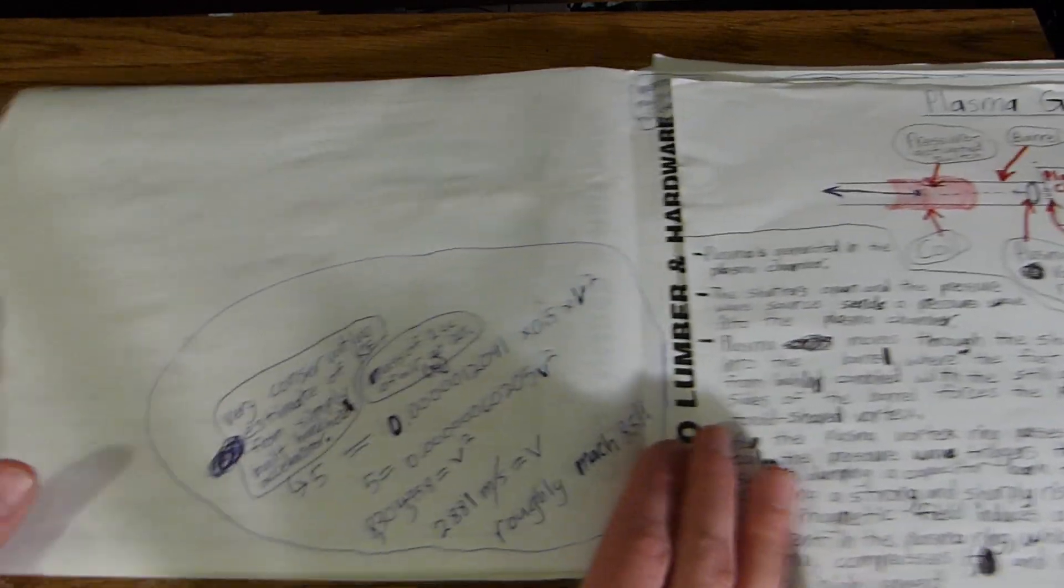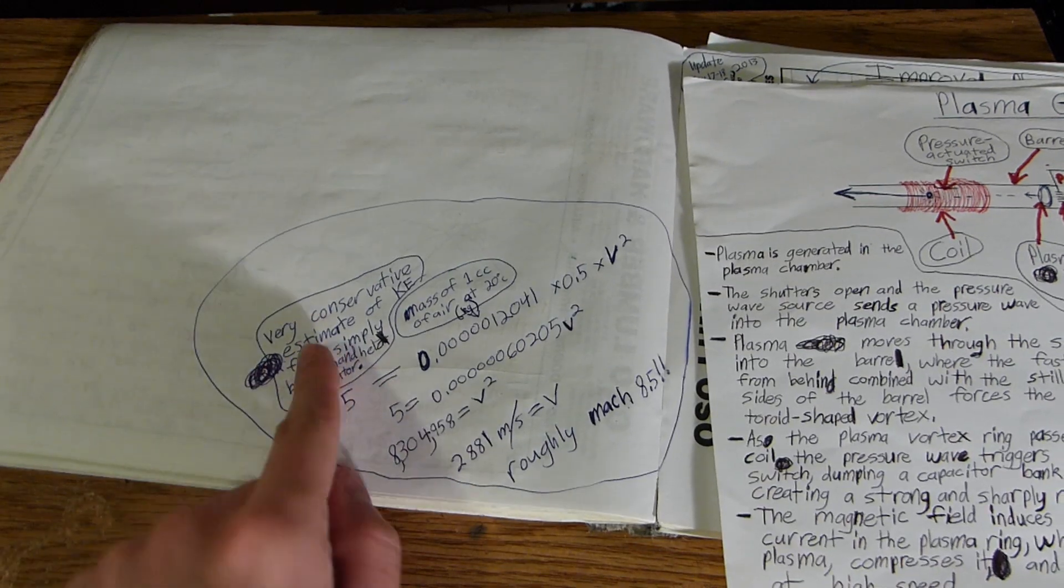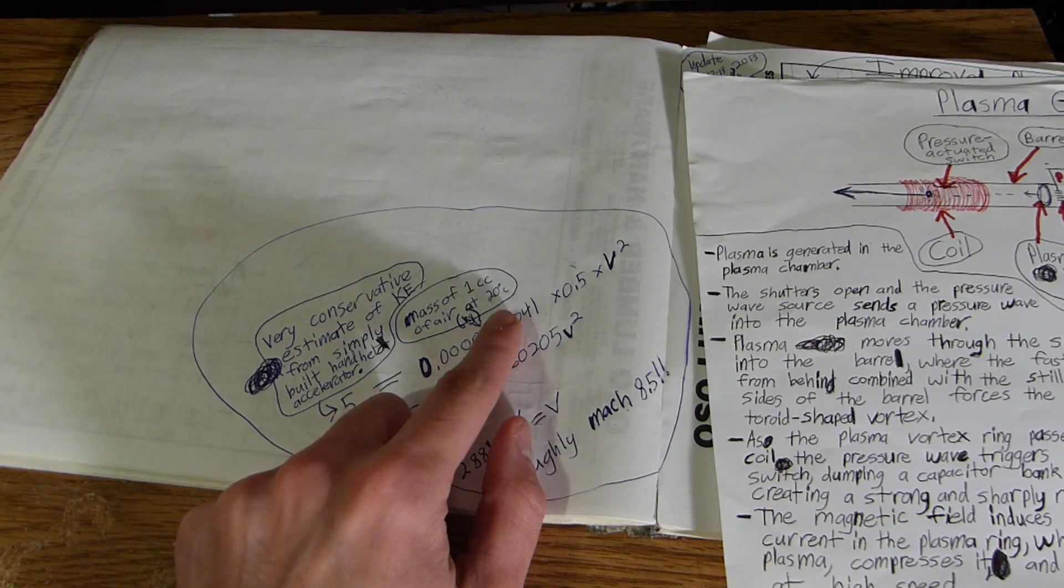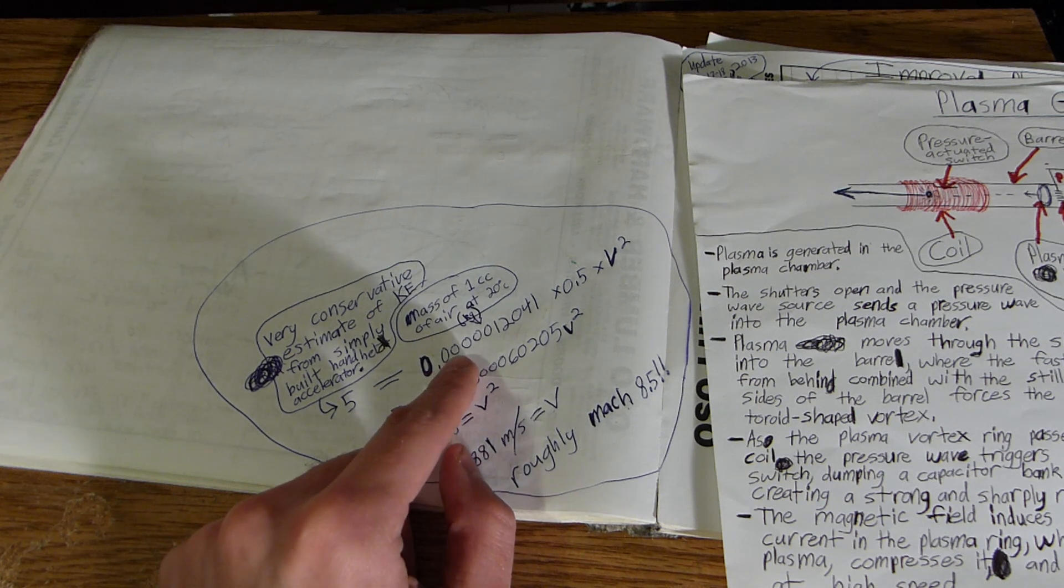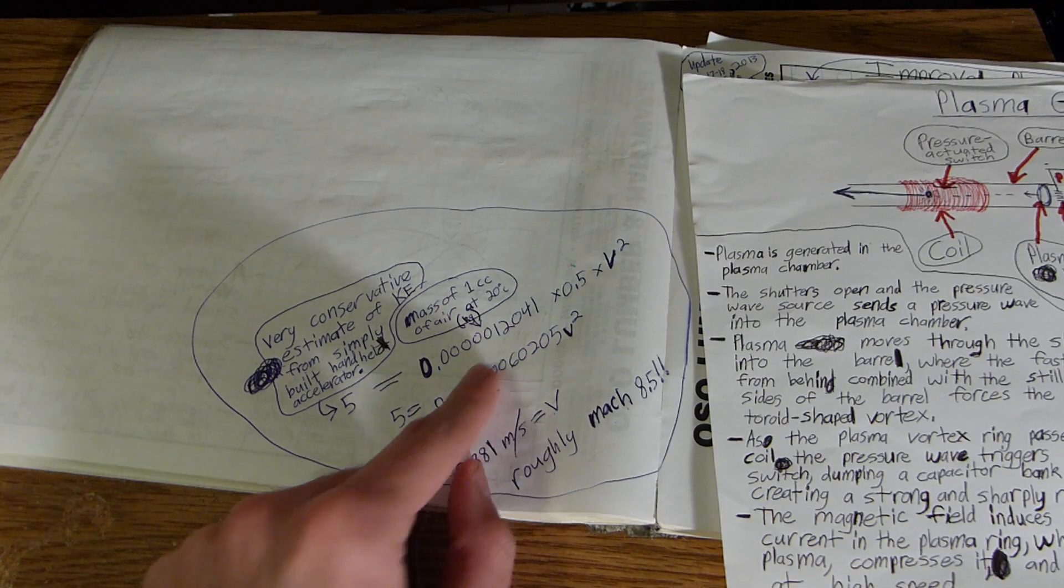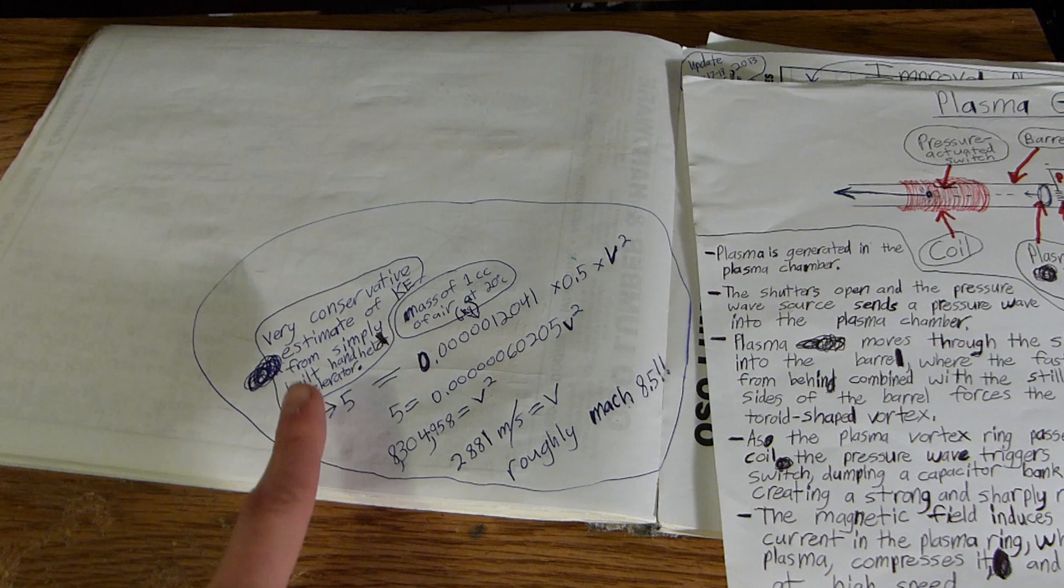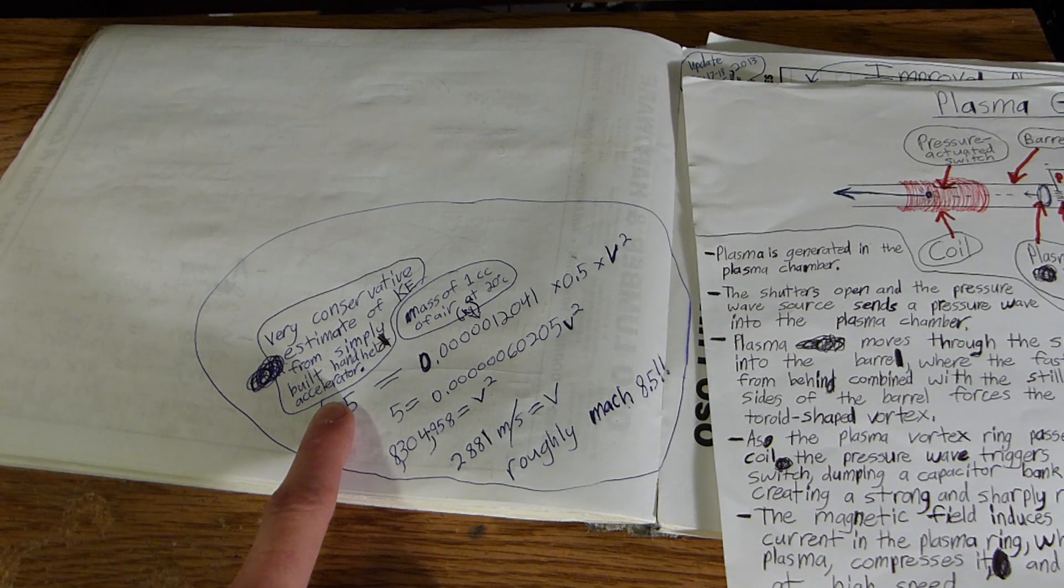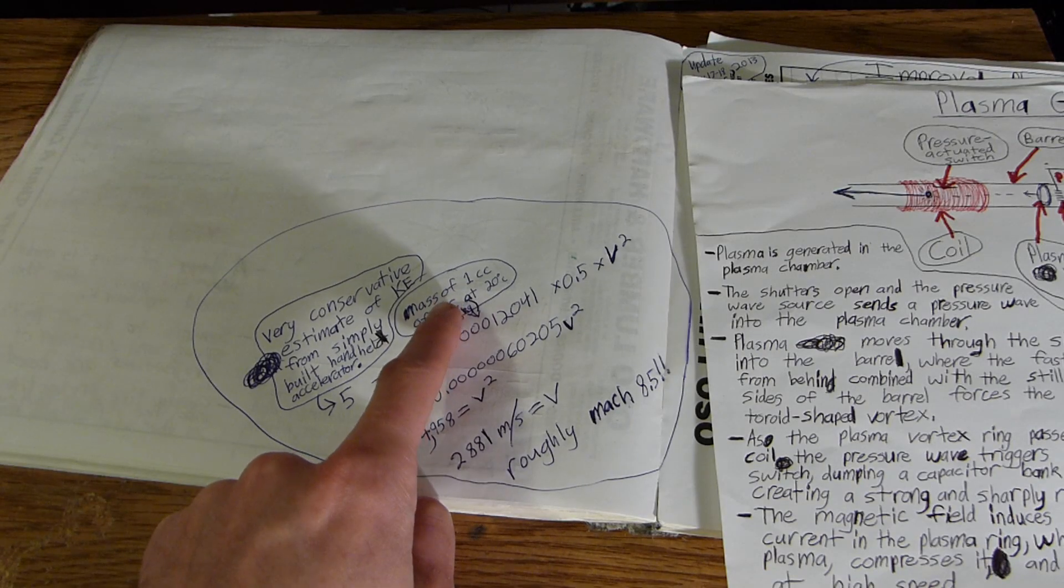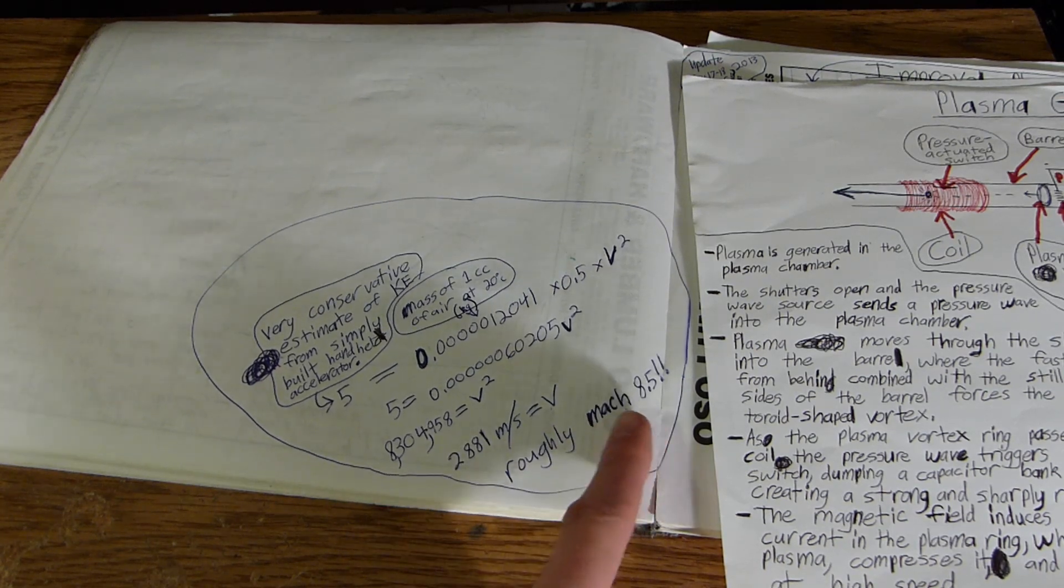I did this calculation here a long time ago. I calculated, so if you had the plasma made from one cubic centimeter of air at 20 degrees Celsius, I calculated that it was 0.000012041 kilograms of air. For this experimental calculation, I gave a very conservative five joules of kinetic energy making it into the plasma. So I calculated the velocity. If you had five joules, one cubic centimeter of air converted to plasma, that would be 2881 meters per second, roughly Mach 8.5.